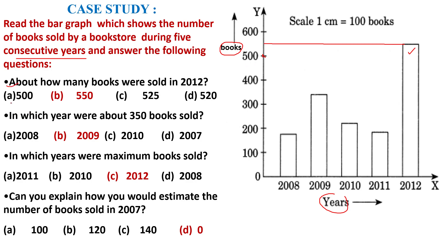Second question is, in which year were about 350 books sold? Now the question changes. This is the midpoint of 300 and 400. In which year? Now, you see your answer, you think about the answer and write in the comment box. If you write in the comment box, then I will clarify it.